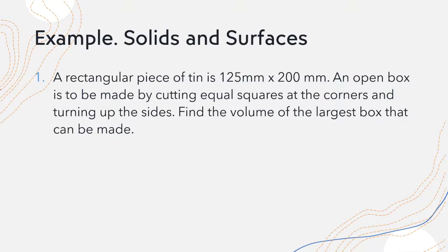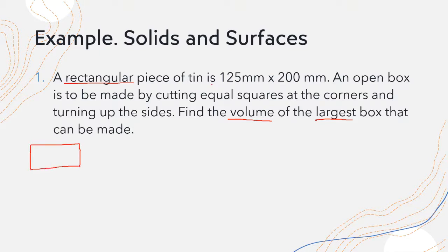A rectangular piece of tin is 125 millimeters by 200 millimeters. An open box is to be made by cutting equal squares at the corners and turning up the sides. Find the volume of the largest box that can be made. We have a rectangular piece with dimensions 125 by 200 — this is 125 and this one is 200 millimeters.